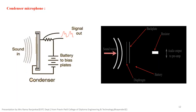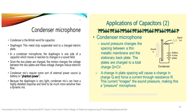Condenser microphone: this is the diagram for a condenser microphone. A condenser microphone is a capacitor. The diaphragm acts as a metal strip suspended next to a charged top plate. The diaphragm is one side of the capacitor, which moves in reaction to changes in sound pressure. Since the two plates are charged, motion changes the voltage between the two plates, and this voltage change induces electron flow. Condenser mics require an external power supply or battery, and because the diaphragm is very light, they can have a wide frequency response and tend to be much more sensitive than dynamic microphones.